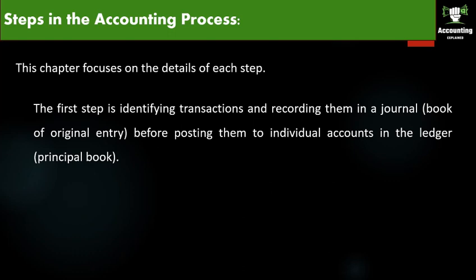Steps in the Accounting Process: this chapter focuses on the details of each step — identifying, summarizing, recording, and communicating. They have to go in the correct order. The first step is identifying transactions — we have to identify the transaction, whether it is an expense or an income.